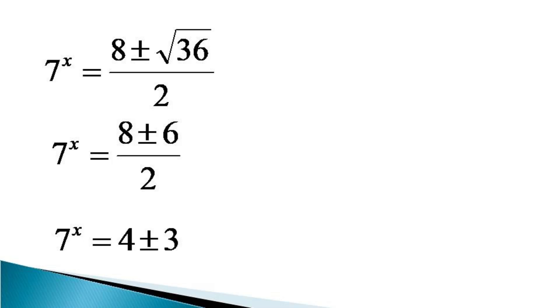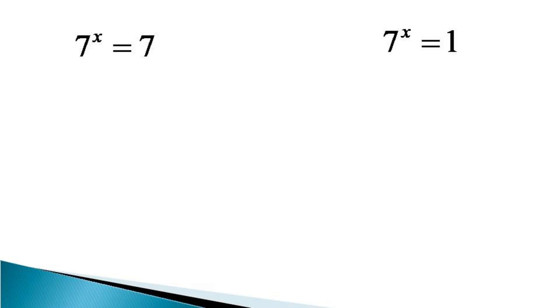The first value is 7 raised to the power x is equal to 7, and the second value comes out to be 7 raised to the power x is equal to 1.